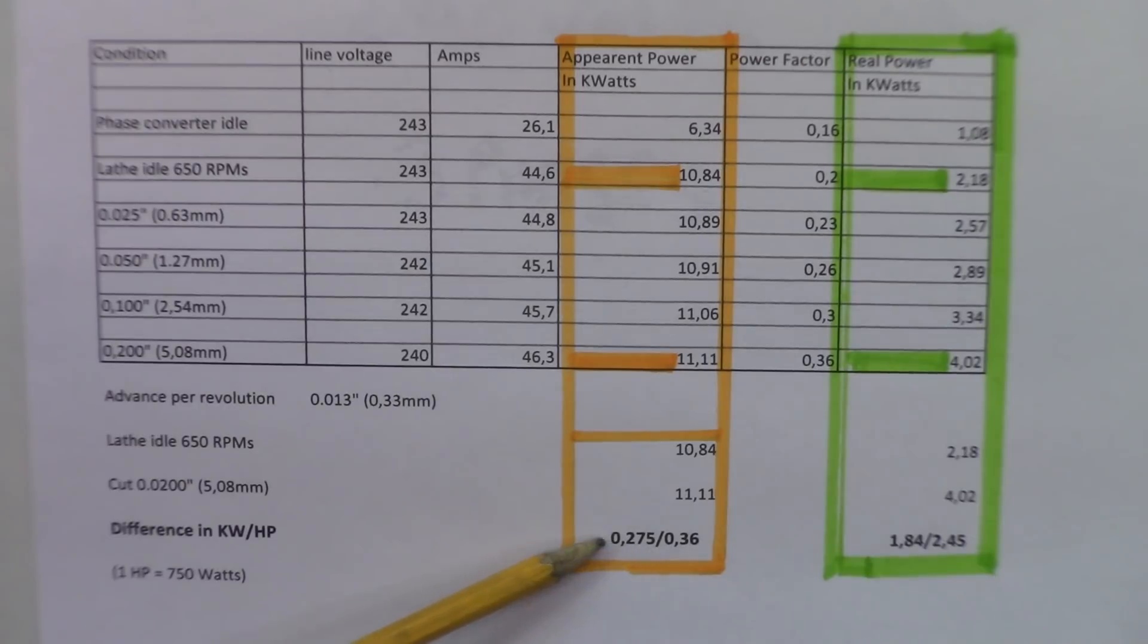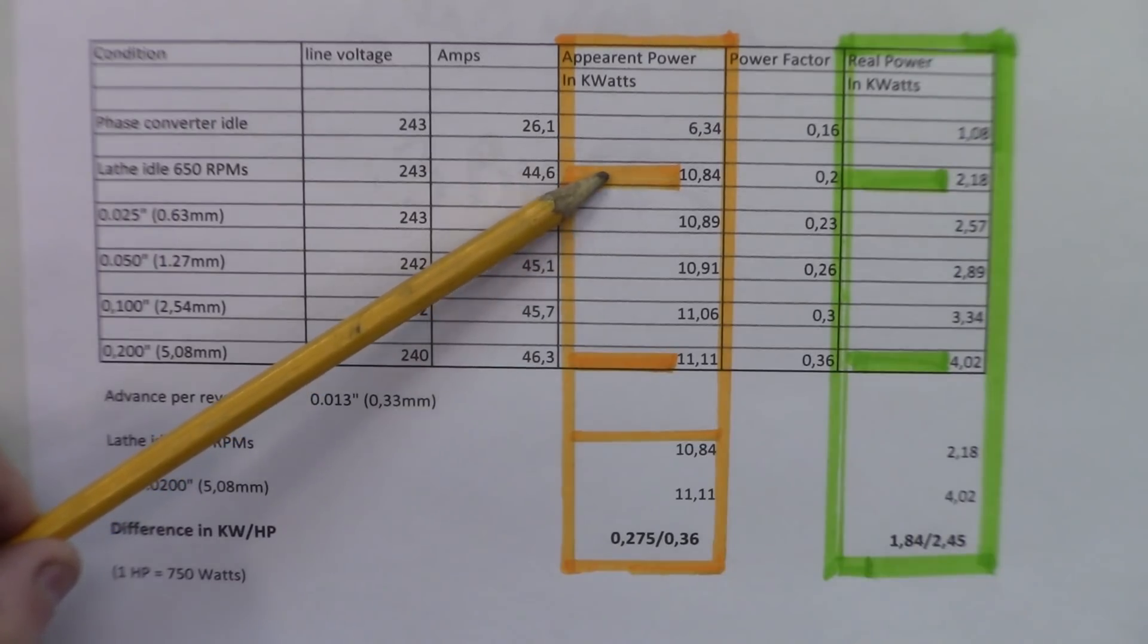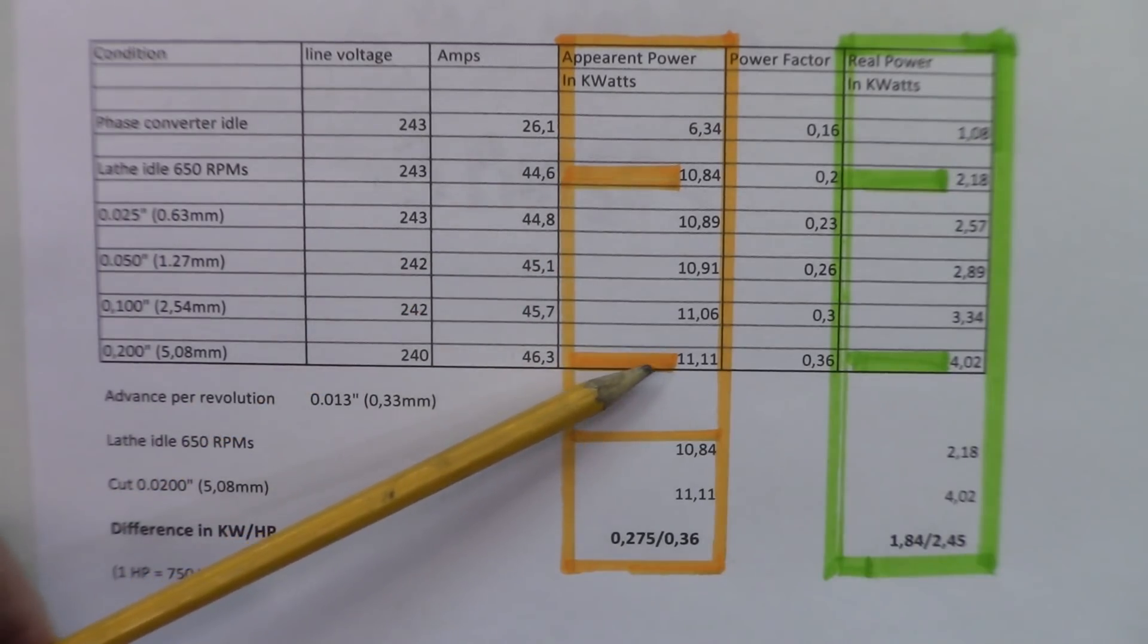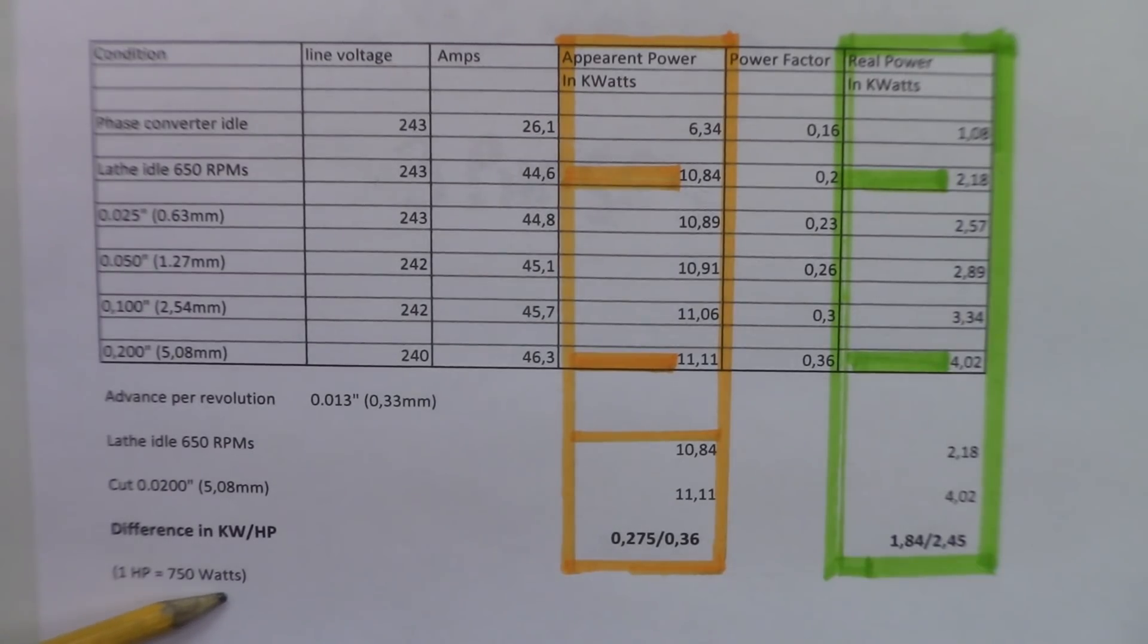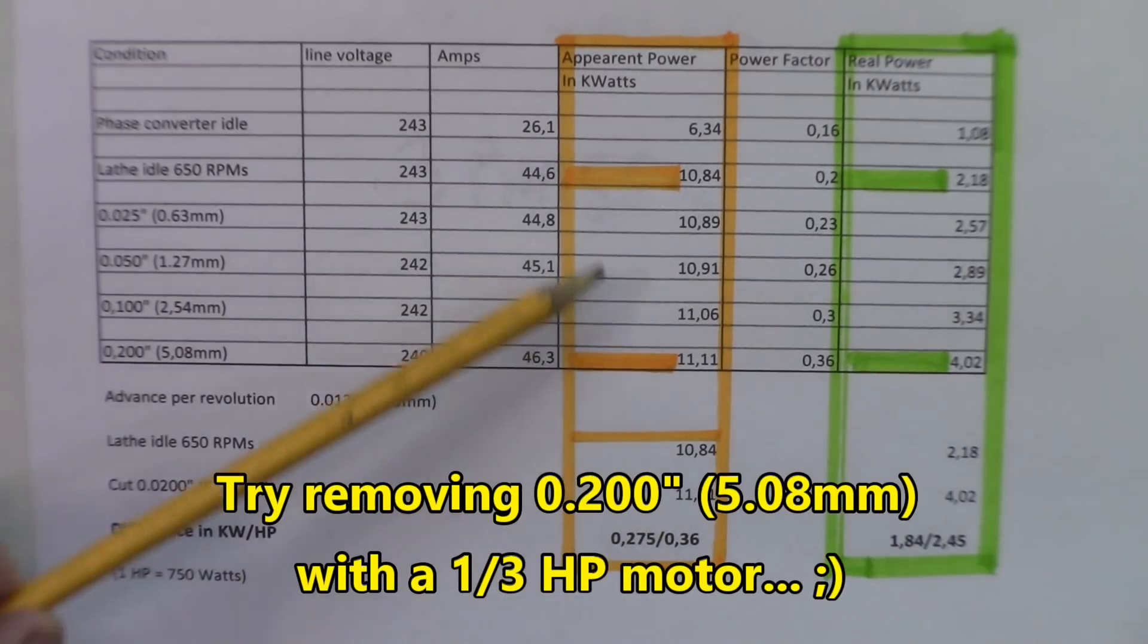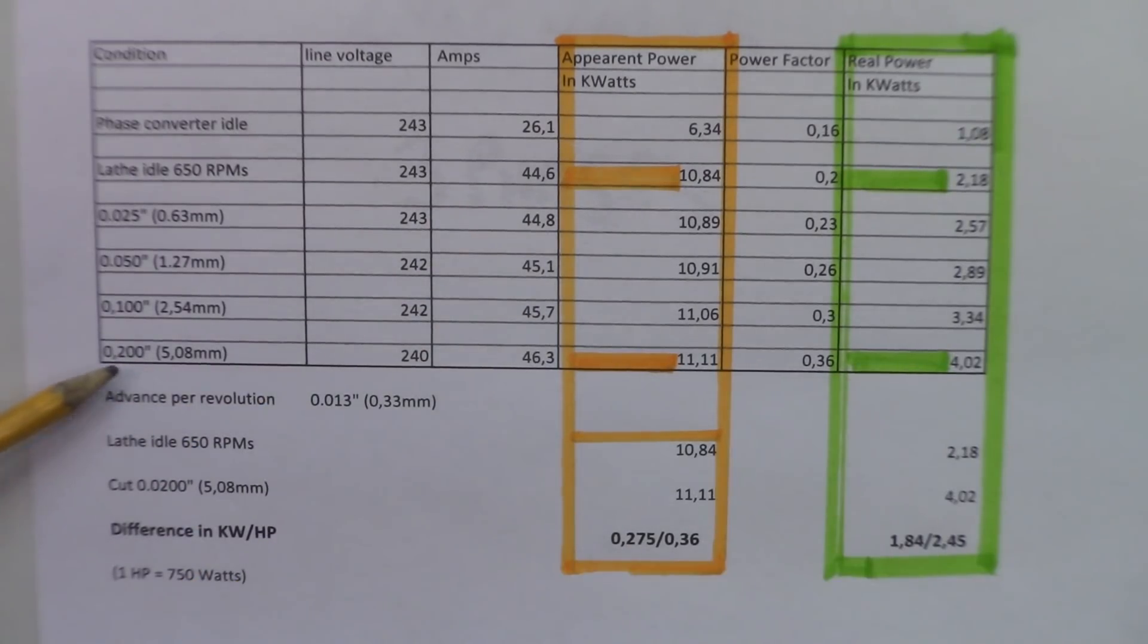That would mean here, because it's kilowatts there, so 0.275, it's 275 watts, which is not really realistic. And if you convert like 750 watts is one horsepower, so that would mean about one third of a horsepower there between idling lathe and a full grown cut at 200 thousandths. But let's get realistic, it doesn't look good.